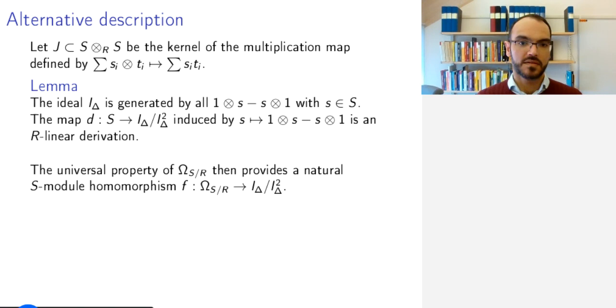This derivation from S to this module—by the universal property, this means that I get a module homomorphism from the universal module of derivations, the Kähler differentials, to this quotient I_Δ/I_Δ².